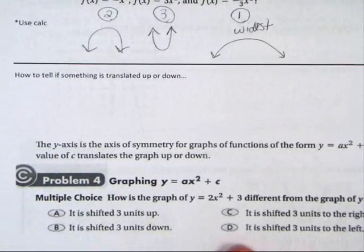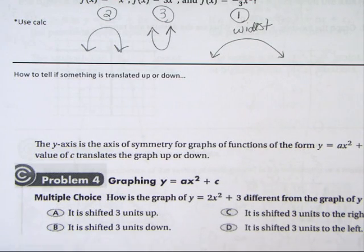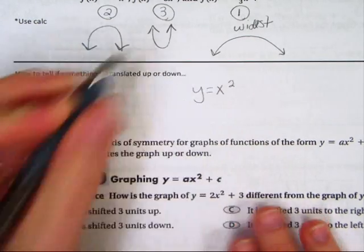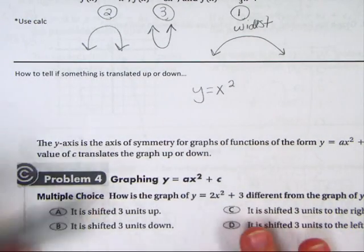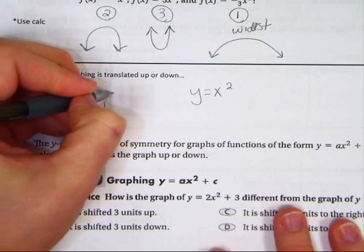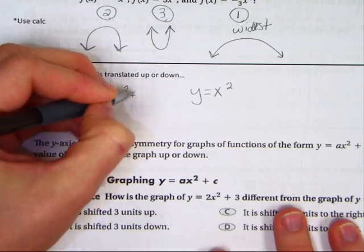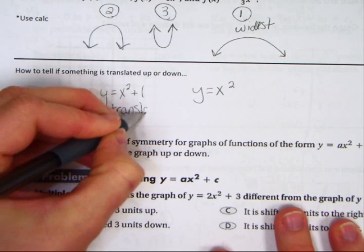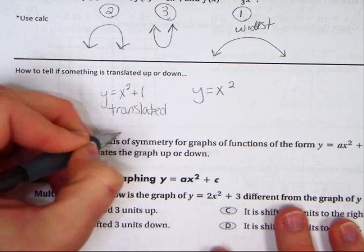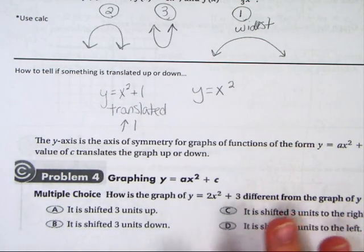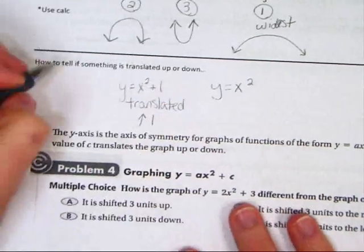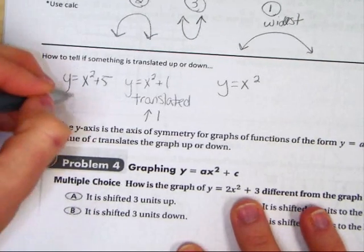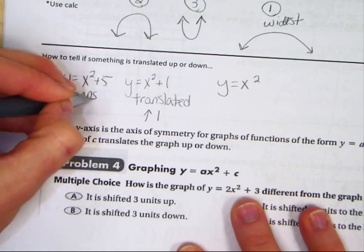Now, the next thing talks about how to move things up and down in a graph. Well, let's start with the most basic, y equals x squared. We call that the parent function. Let's practice moving it up. If you do y equals x squared plus 1, that moves it. Let's write the real word, translated. That's what moved means. Translated up 1. That's not bad, is it? Just the plus 1. So, if you have y equals x squared plus 5, that one's just going to be translated up 5.